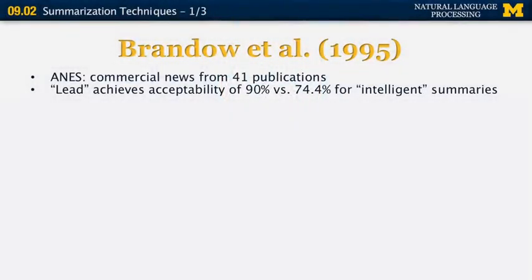A few more papers from that period. One is by Brandow, Mitze, and Rao, 1995, about news articles — a shift from previous work focused on scientific articles. The system was called ANES and included commercial news from a large number of publications. They were able to evaluate different techniques for intelligent summarization and showed that lead summaries — essentially picking the first few sentences of a document — are much more acceptable than automatic summaries.